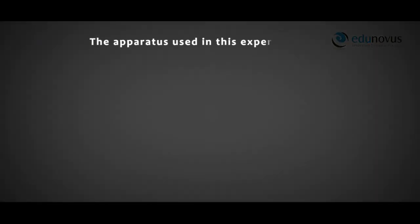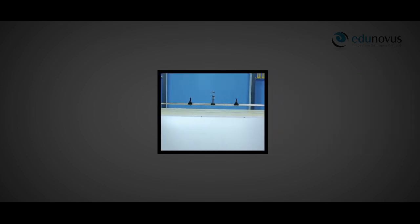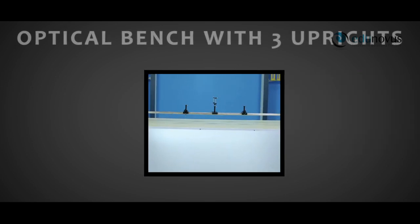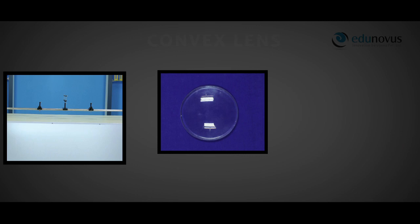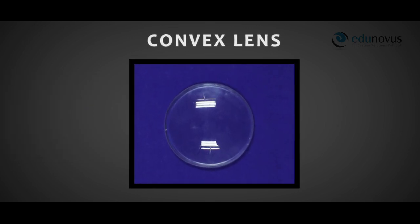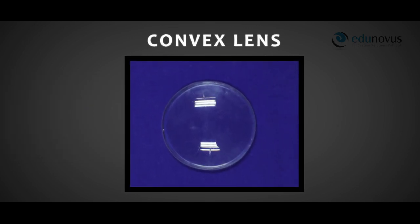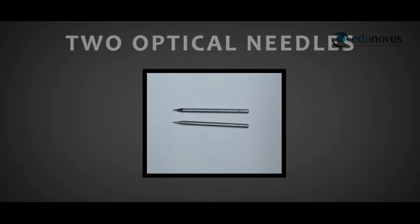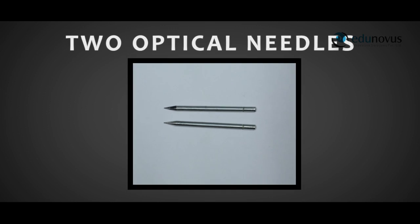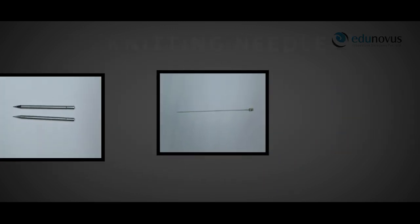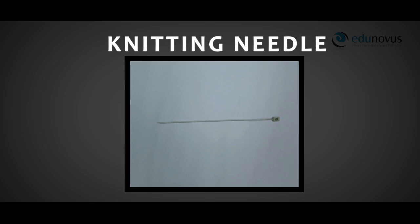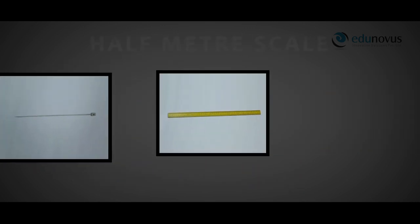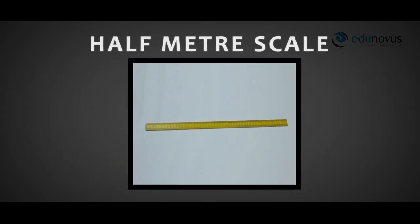The apparatus required for this experiment are: an optical bench with three uprights, a convex lens, two optical needles, a knitting needle, and a half meter scale.